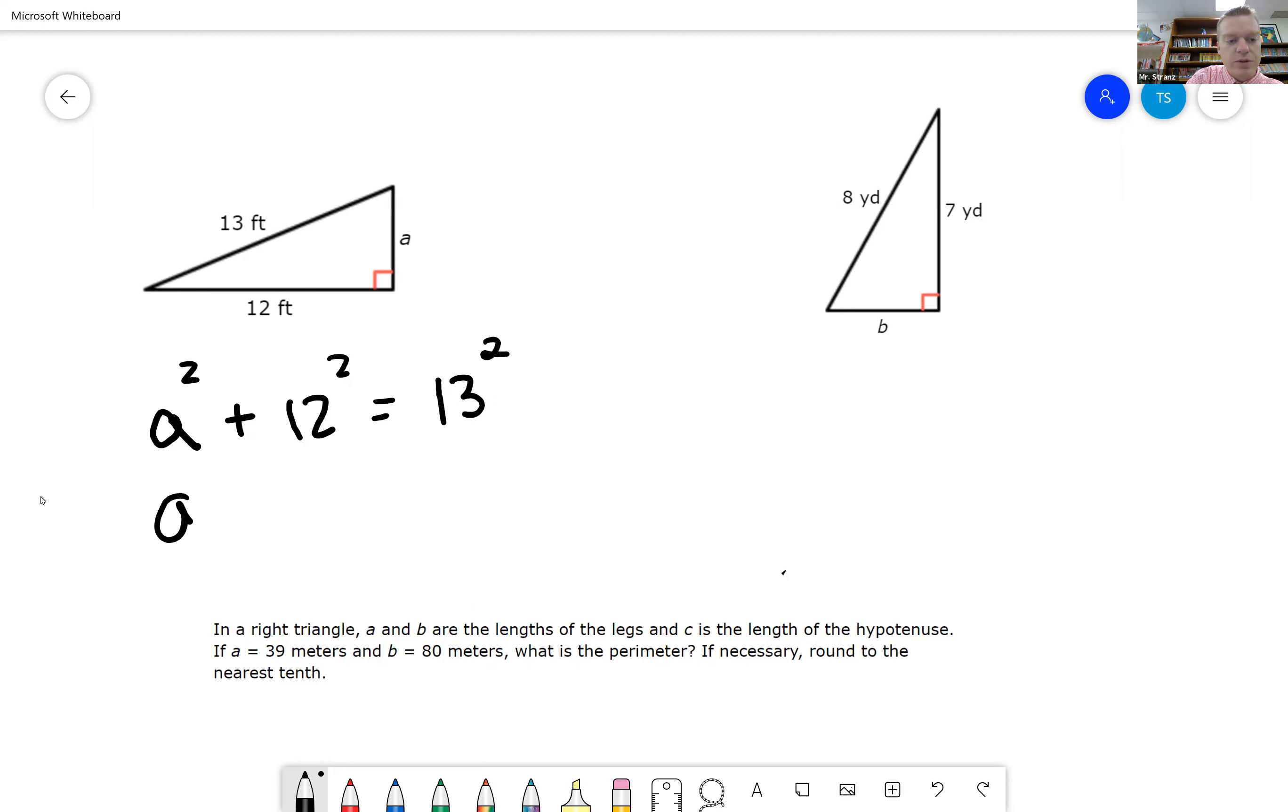We're going to work this problem out first. We're going to have A squared plus 12 squared is 144, and 13 squared is 169.